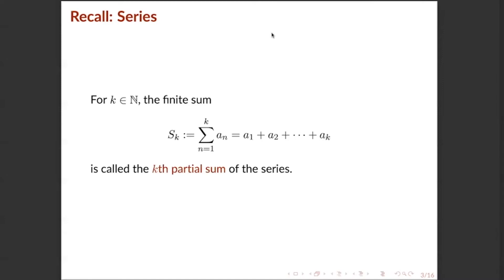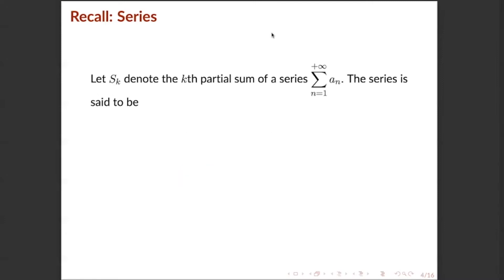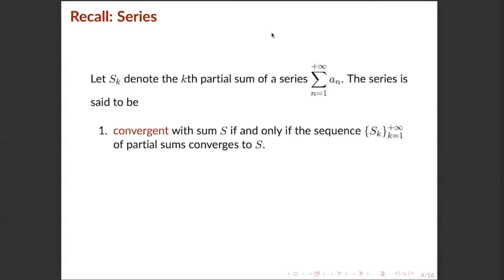Now that we know the k-th partial sum of a series, we can determine whether a series is convergent or divergent. Let s_k denote the k-th partial sum of a series a_n. The series is said to be convergent with sum s if and only if the sequence of partial sums converges to s — meaning the limit of s_k as k approaches infinity equals s. In this case, we write the summation of a_n from n=1 to positive infinity equals s.